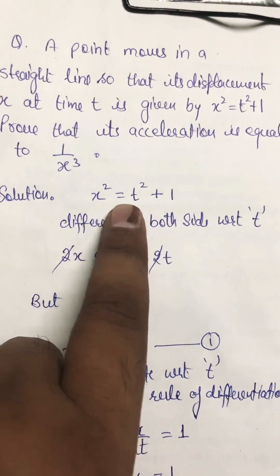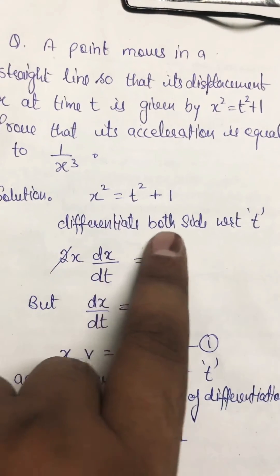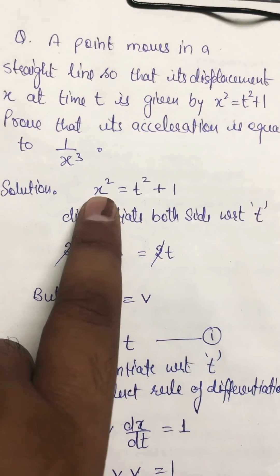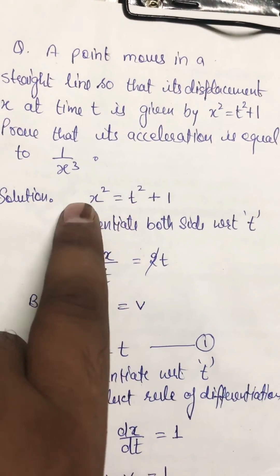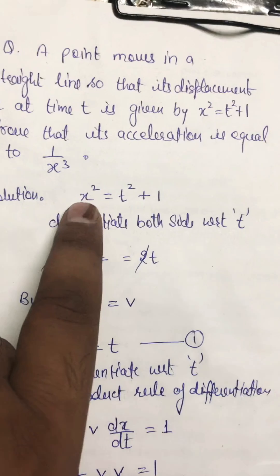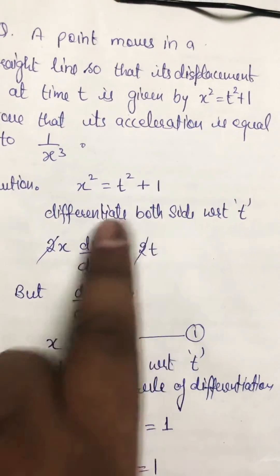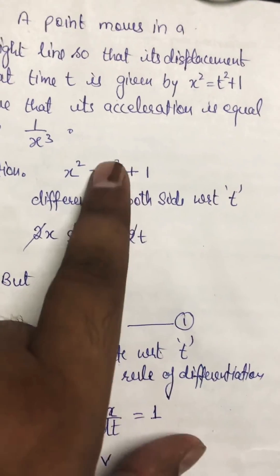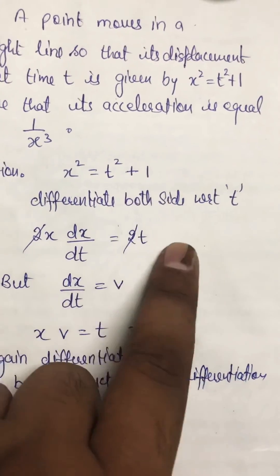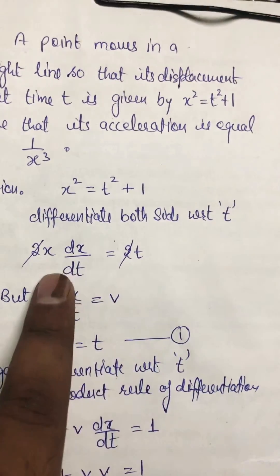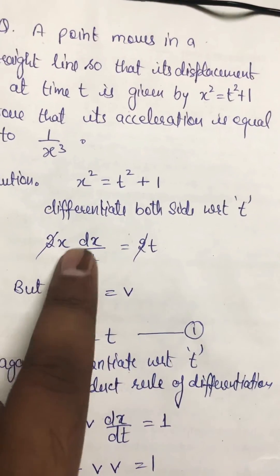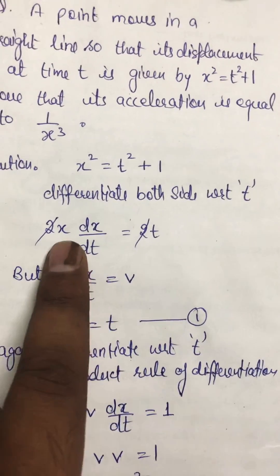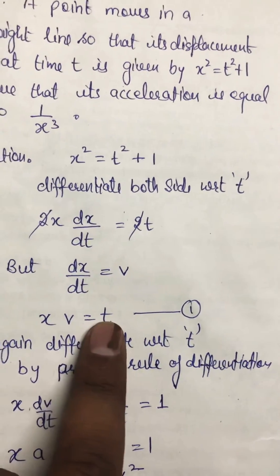We rewrite the equation x² = t² + 1 and differentiate both sides with respect to time. Differentiation gives 2x dx/dt on the left, and 2t on the right — the 2s cancel. Since dx/dt is velocity v, we get x·v = t. Let this be equation 1.